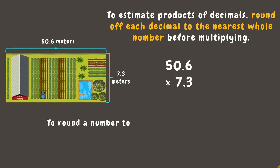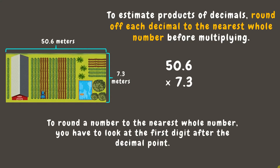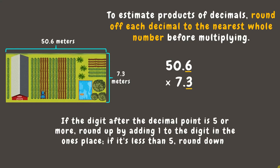Remember, to round a number to the nearest whole number, look at the first digit after the decimal point. If the digit after the decimal point is 5 or more, round up by adding 1 to the digit in the ones place. If it's less than 5, round down.